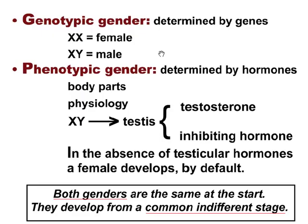An animal's genotype is determined by inheritance, but phenotype — anatomy and physiology — is determined by hormones. The XY genotype normally produces a testis. Supporting cells of the testis produce hormones that convert germ stem cells to spermatogonia, that inhibit female duct development, and that promote male genital development in the presence of testosterone receptors. In the absence of testosterone, a female develops by default. All genital development begins with an indifference stage that then becomes either male or female.